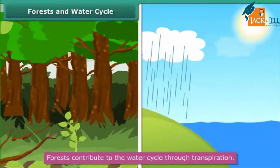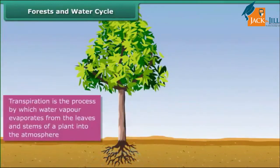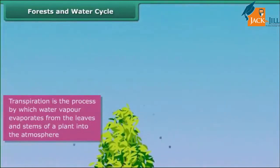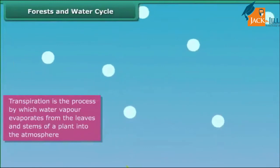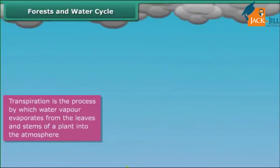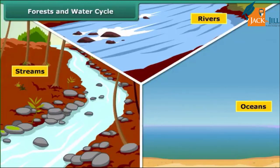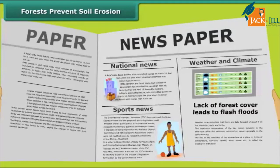Forests play an important role in the water cycle as well. They contribute to it through transpiration. Transpiration is the process by which water vapor evaporates from the leaves and stems of a plant into the atmosphere. It then rises up in the air, and when it comes in contact with a cooler surface, it condenses and forms clouds. When the water droplets in the clouds become heavy, they fall down as rain. The rainwater flows into streams, rivers and oceans, thereby completing the water cycle.